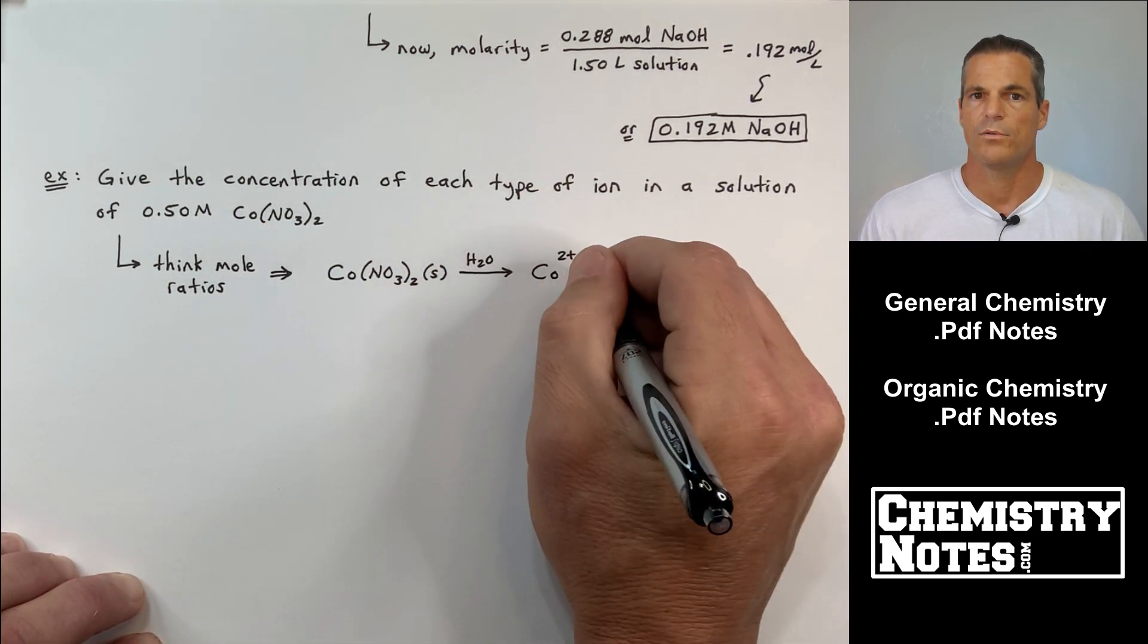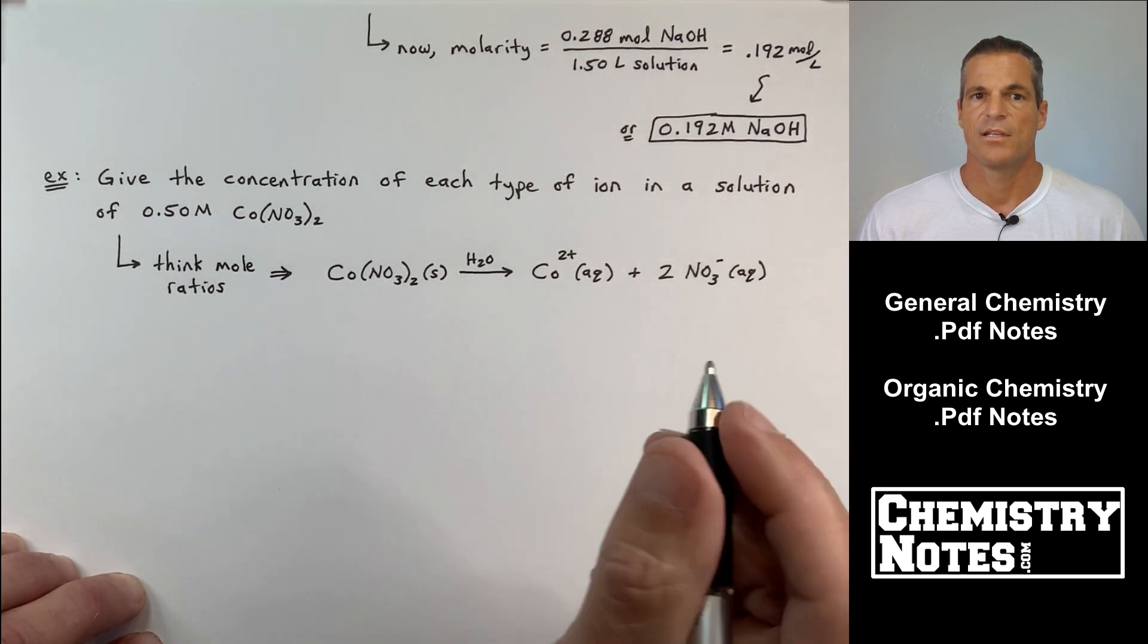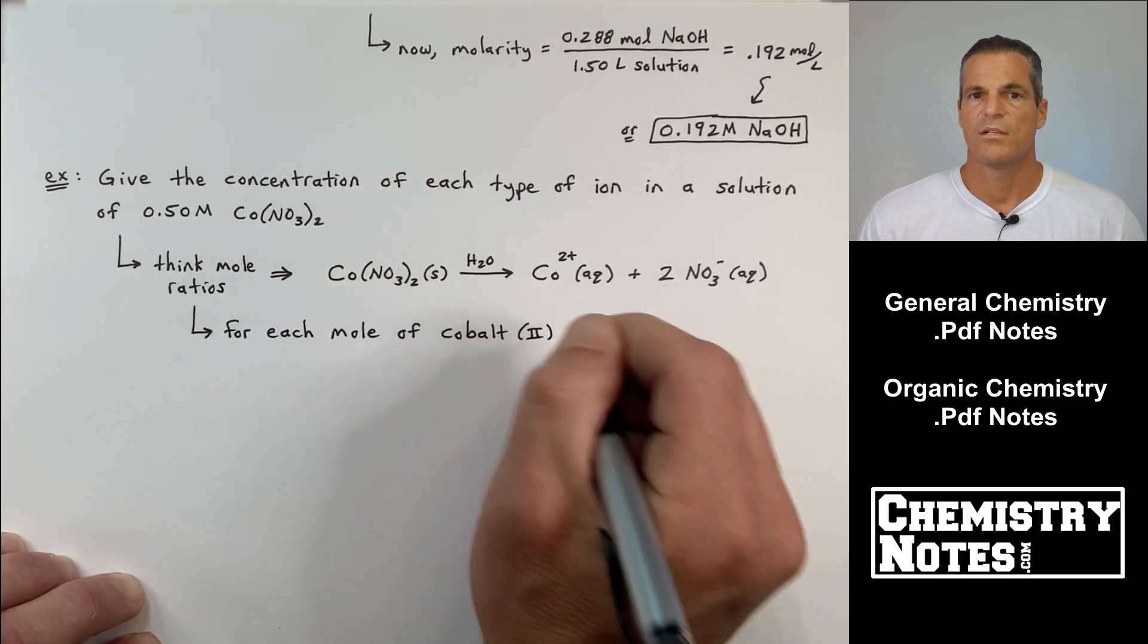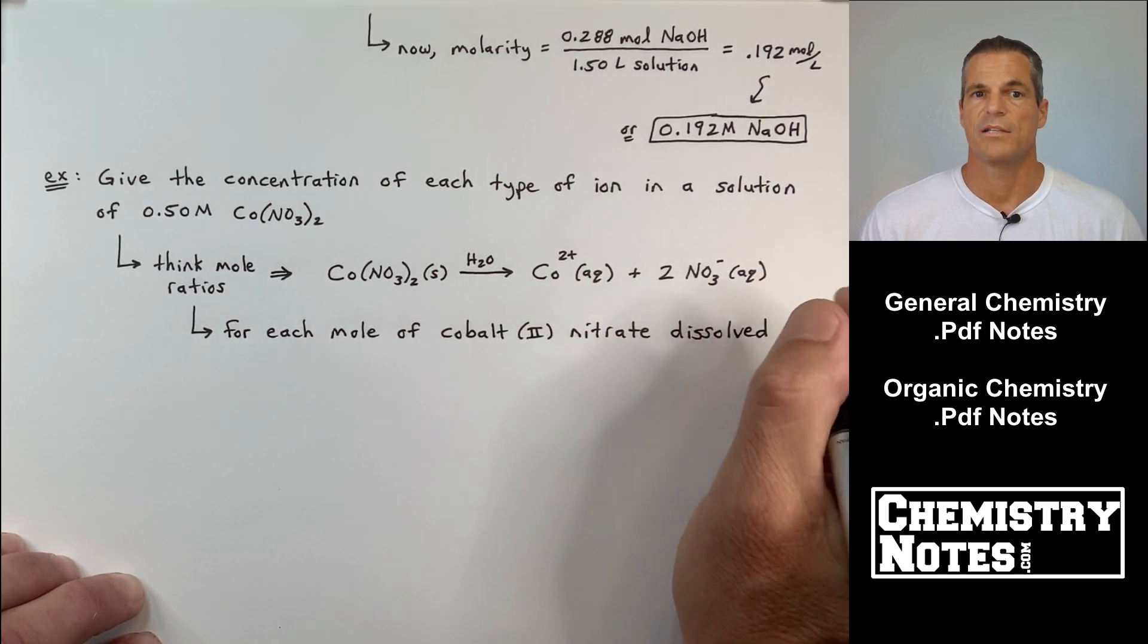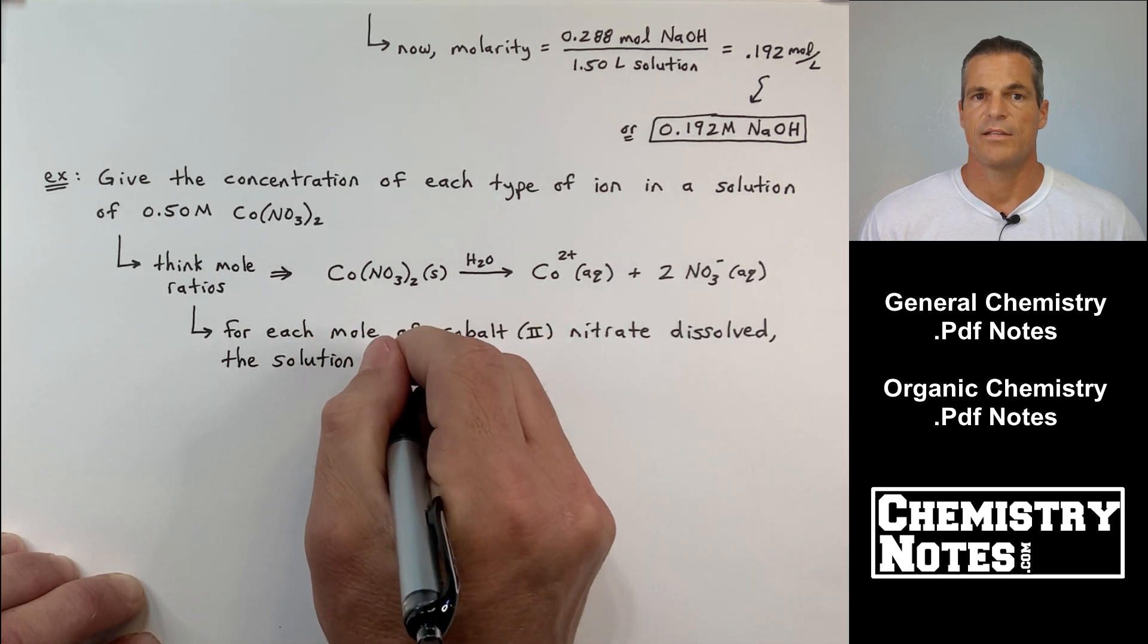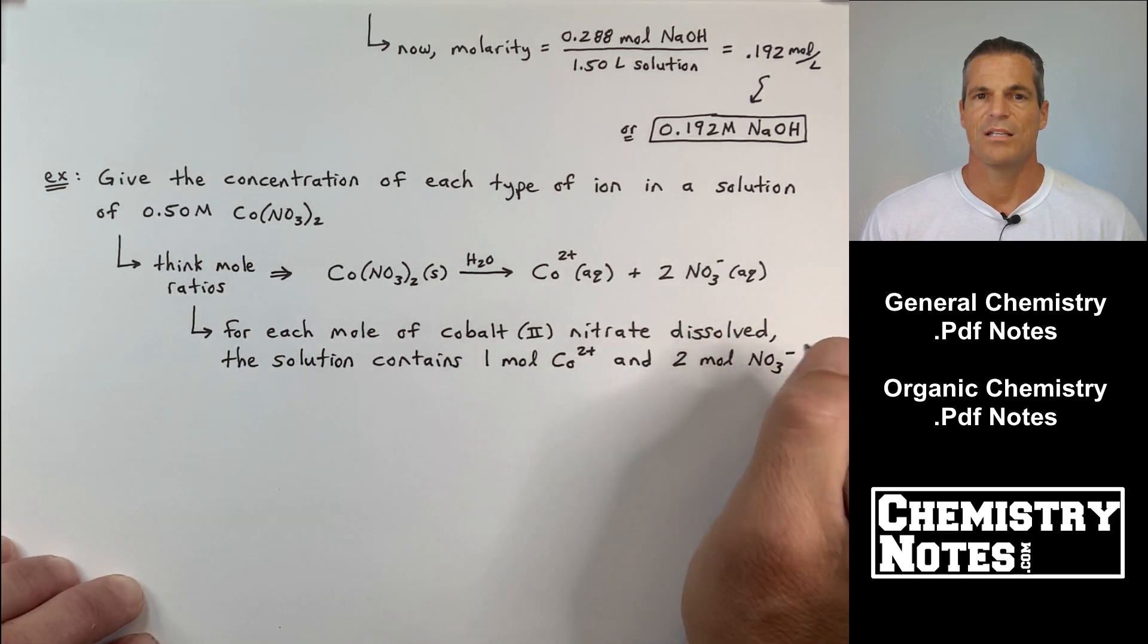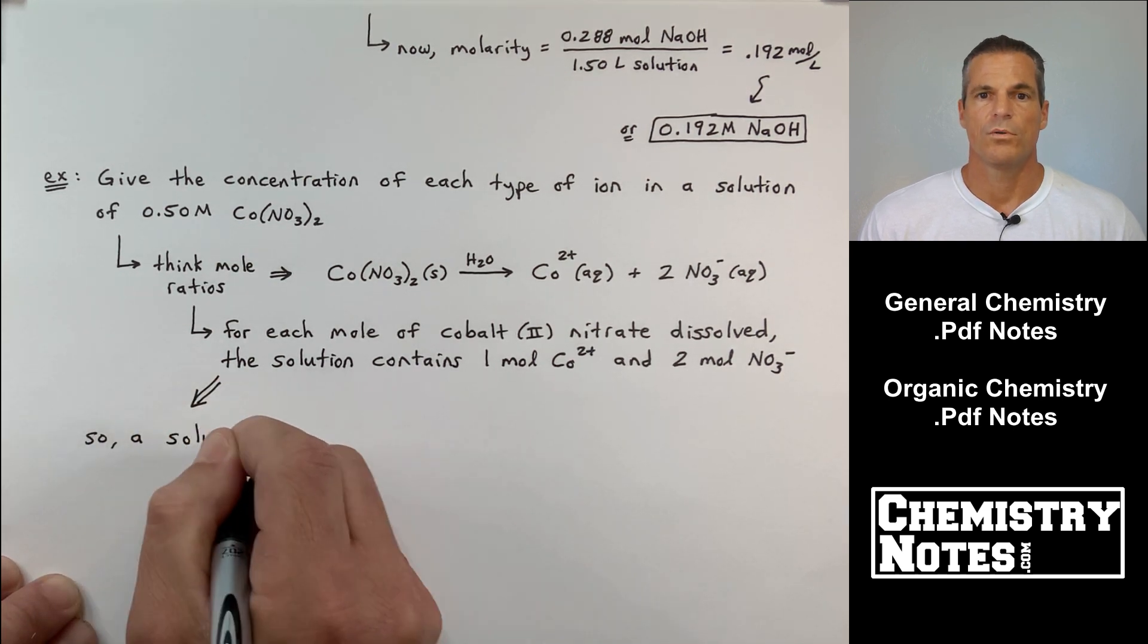And this is the balanced equation right here. Co(NO3)2 dissolved in water yields Co2+ aqueous plus two NO3- aqueous. So, in our notes here, let's write that down. It says, for each mole of cobalt-2 nitrate dissolved, the solution contains one mole of Co2+ and two moles of NO3-.